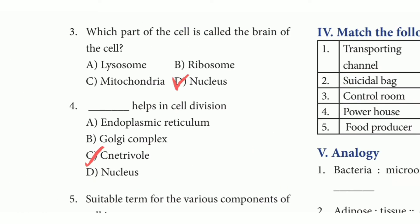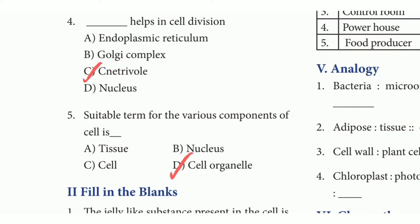Third one: which part of the cell is called the brain of the cell? The answer is option D — nucleus. Fourth one: dash helps in cell division. The answer is option C — centriole. Fifth one: suitable term for the various components of cell is dash. The answer is option D — cell organelle.